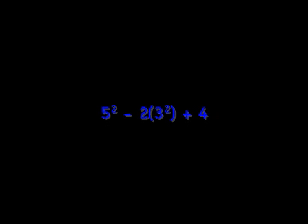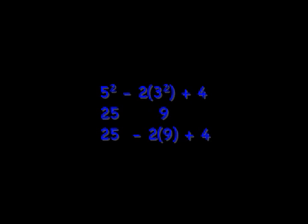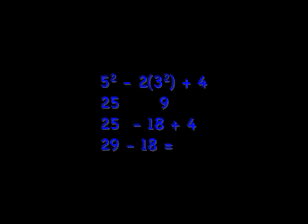First, you have to do what's in parentheses. Three squared is nine. Then, doing the exponents, five squared is 25. 25 minus nine times two, or 18, plus four, is the same thing as 29 minus 18, or 11.